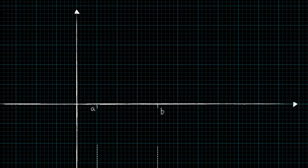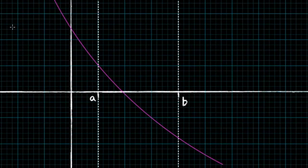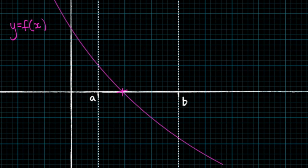Hey guys, in this video we're going to be looking at one of the numerical methods, specifically how to locate a root by considering a change of sign. Let's say that we have a function y equals f of x, and it crosses the x-axis at a point between a and b, or in other words, it has a root in the interval (a, b).